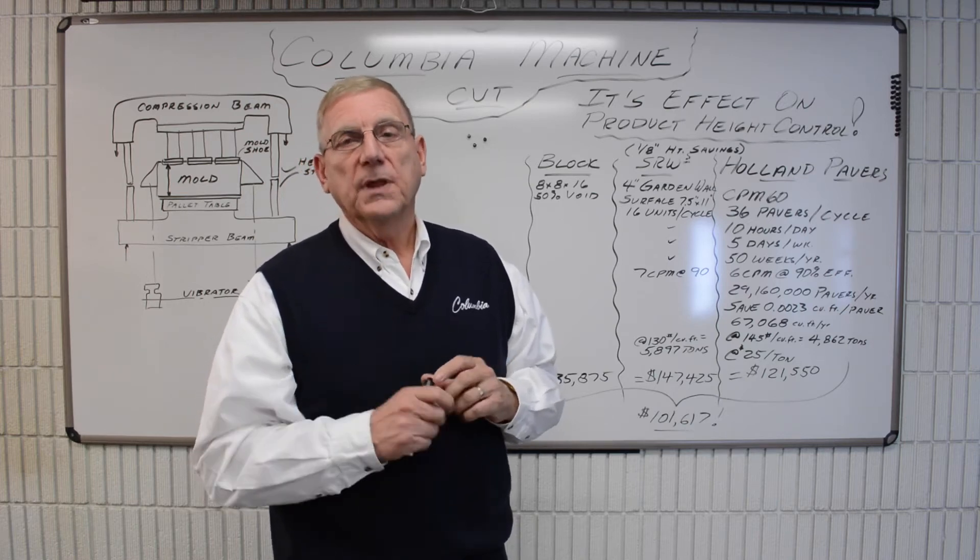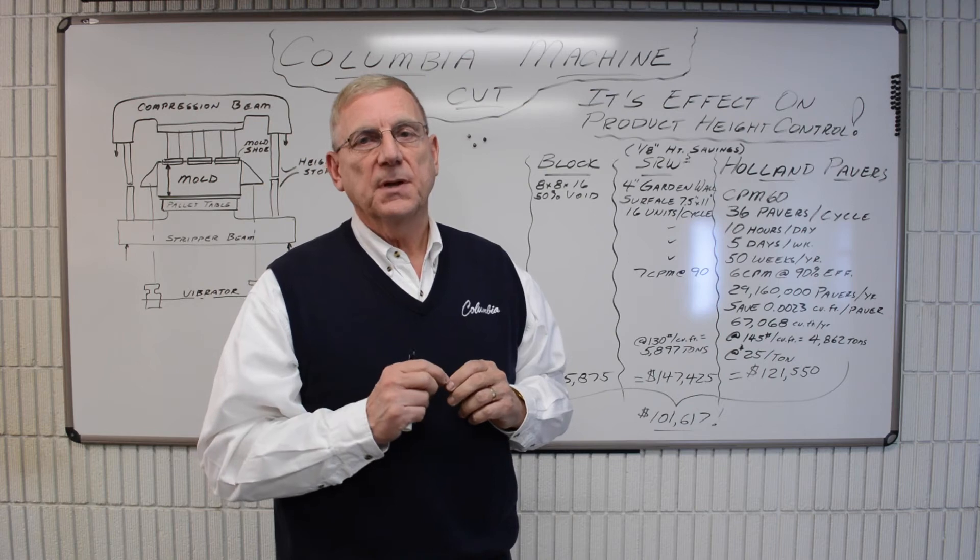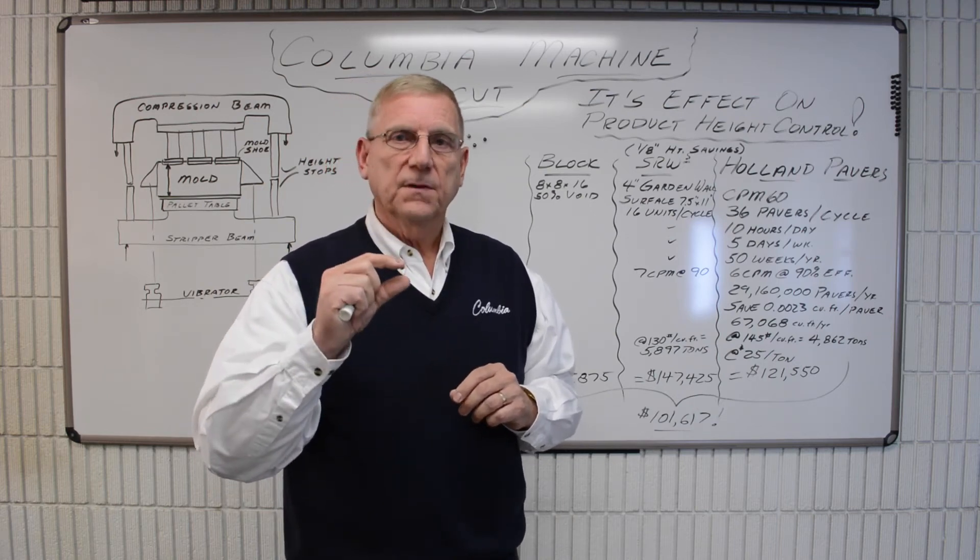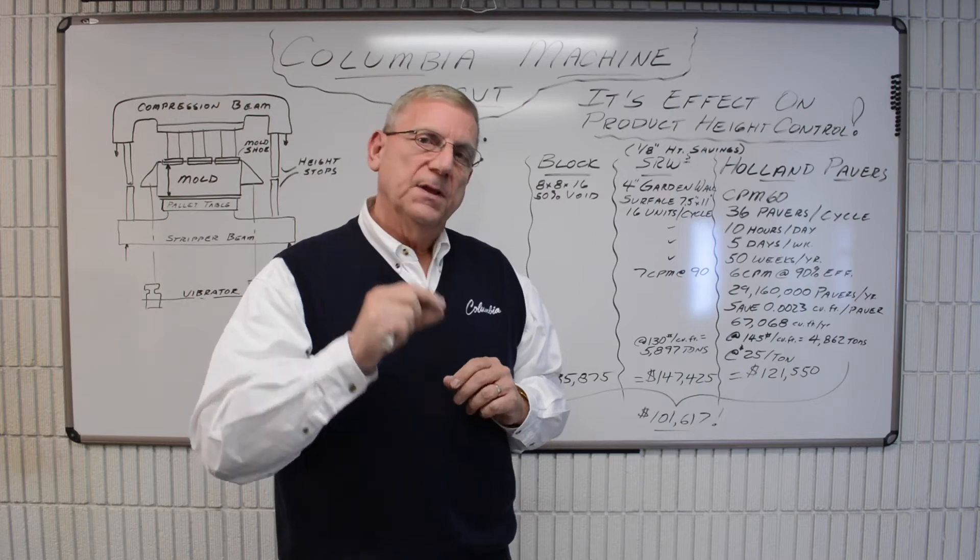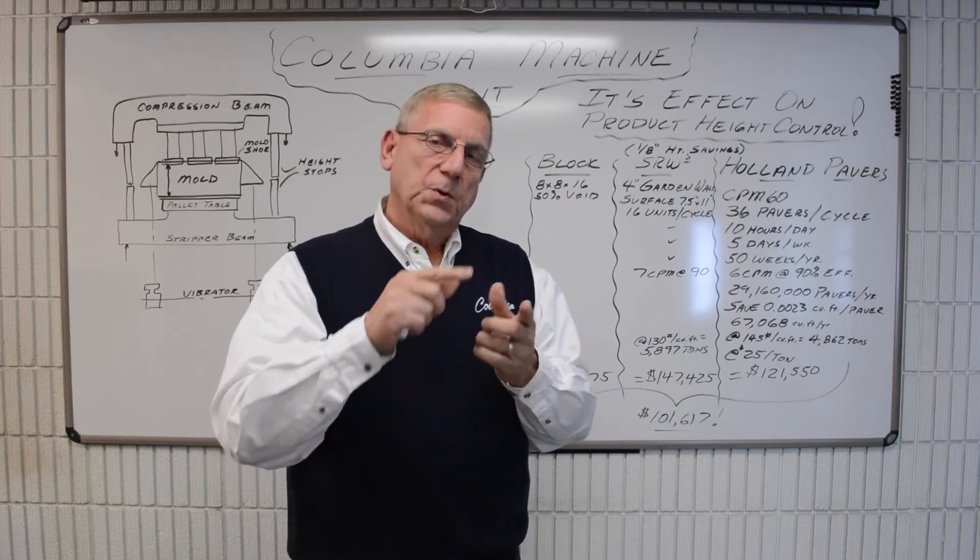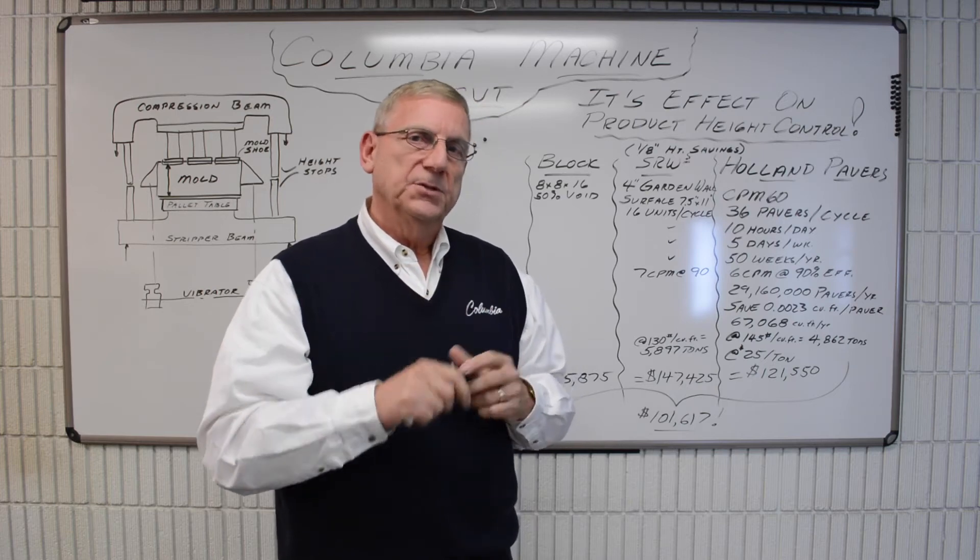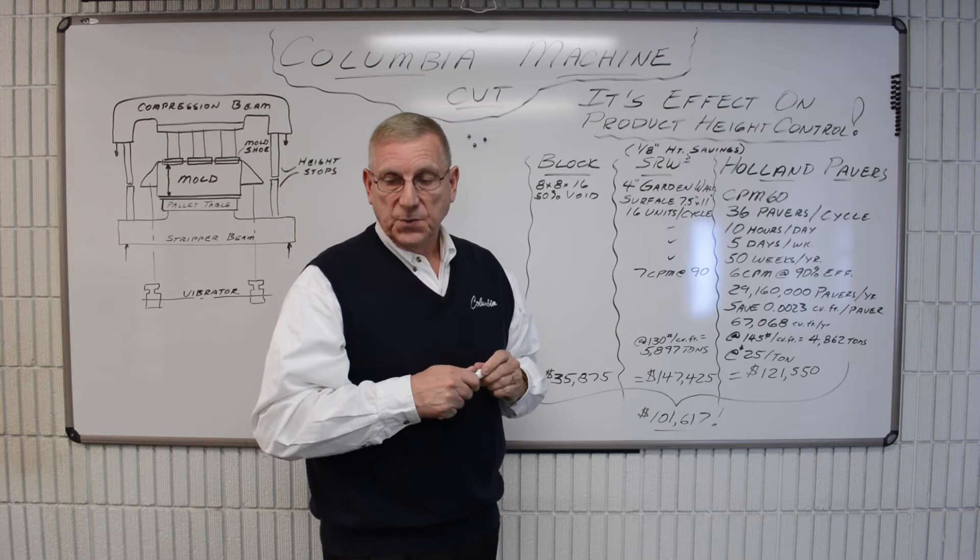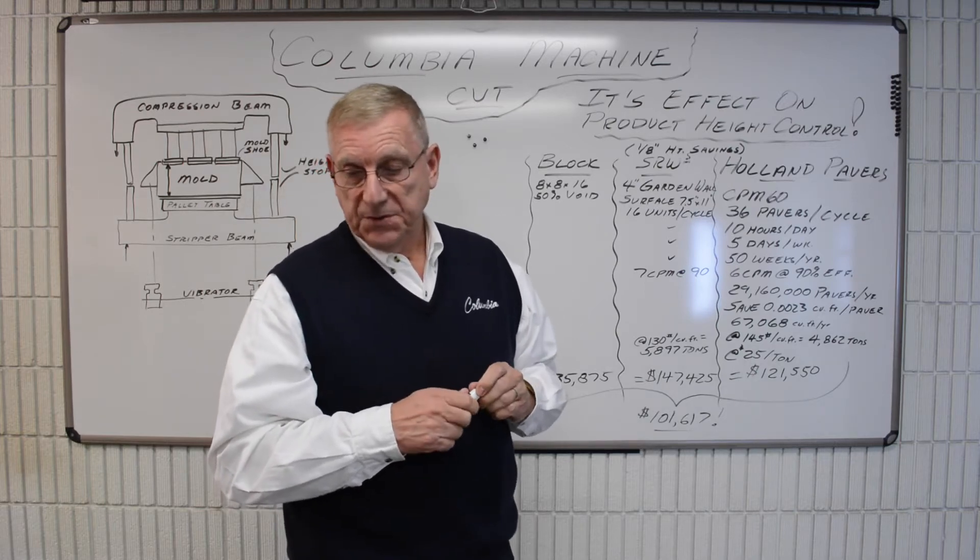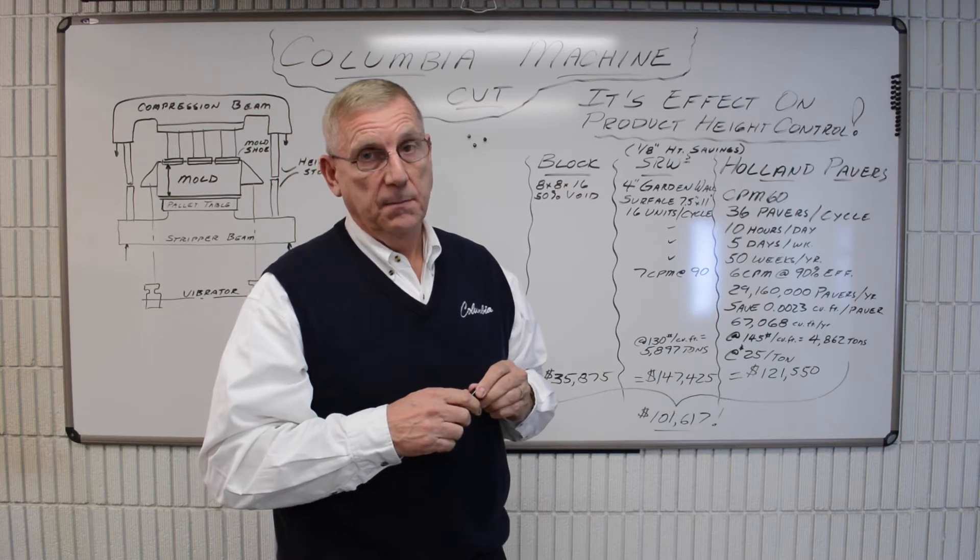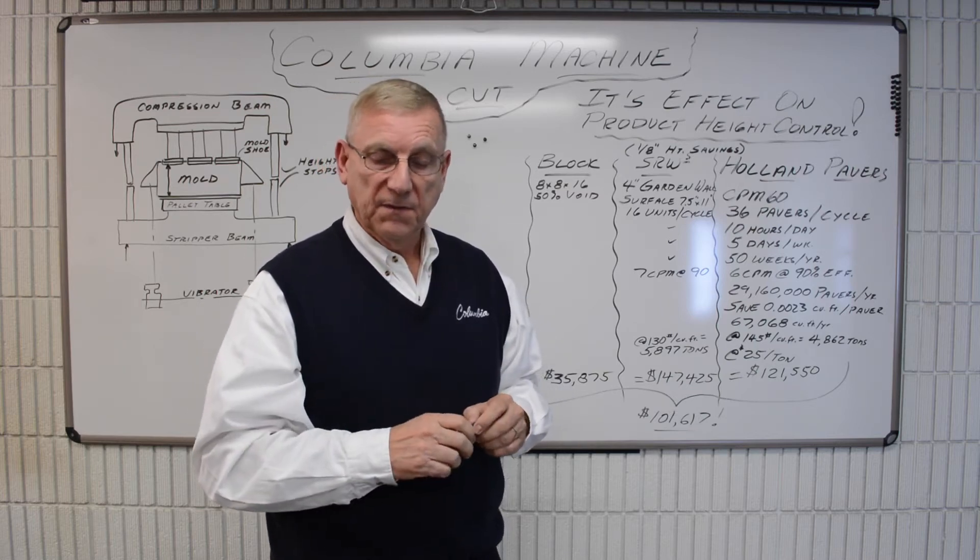But if you could hold half of that, if you could hold plus or minus 1/16 of an inch, you could effectively save 1/8 of an inch of material per paver because you could work on the lower tolerance range of that specification. So now you're producing pavers between 2 and 1/4 and 2 and 3/8 inches in height and not on the upper end of that tolerance range.